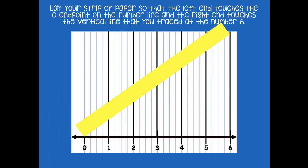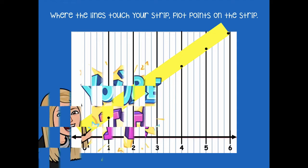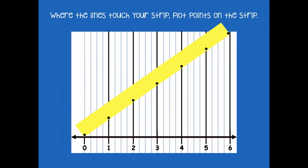Where the lines touch your strip, plot the points on the strip. So we have zero, one, two, three, four, five, and six. Pause the video, plot those points on your strip, and then click play when you're ready for the next step.